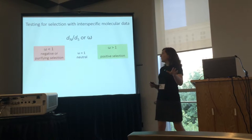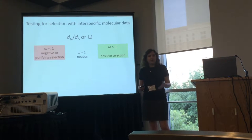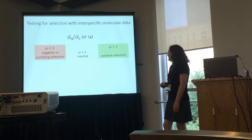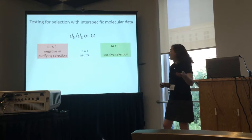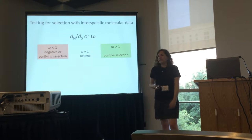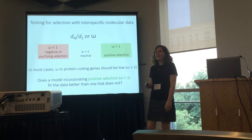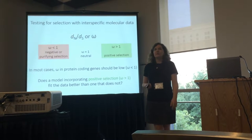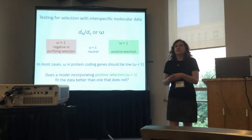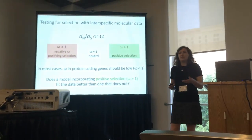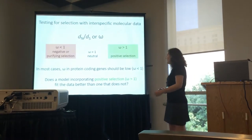When this parameter is less than 1, this is referred to as negative or purifying selection. When it exceeds 1, we have an overabundance of non-synonymous mutations, referred to as positive selection. In most cases, we would expect protein-coding genes to have an omega less than 1, because you wouldn't want a protein with an excess of amino acid-altering mutations.